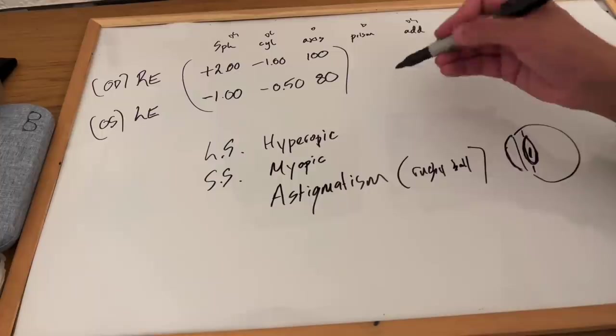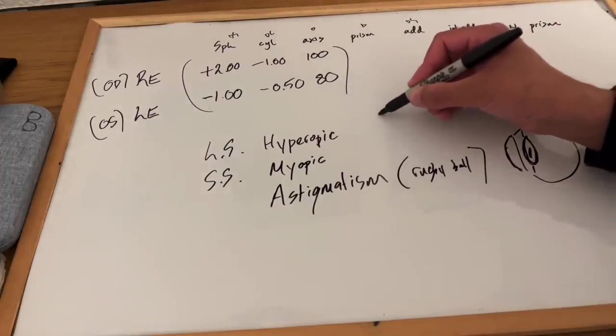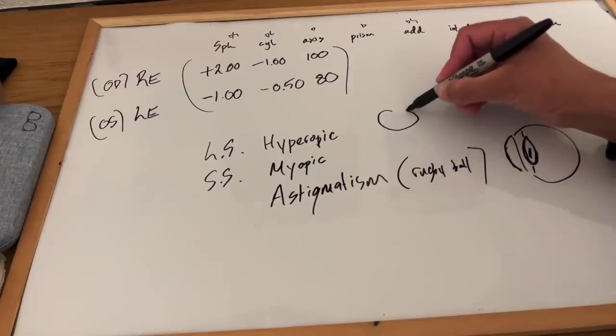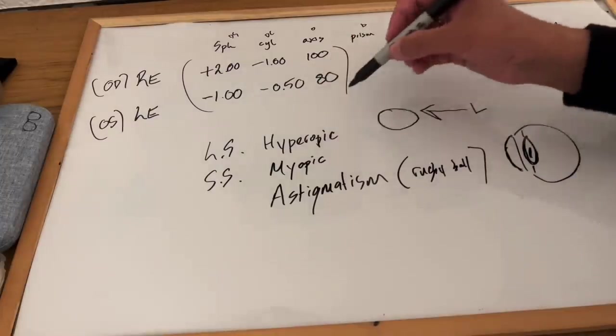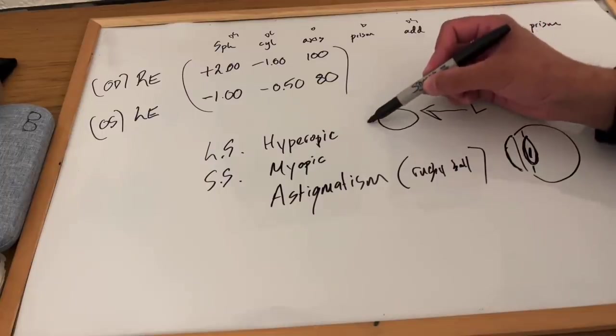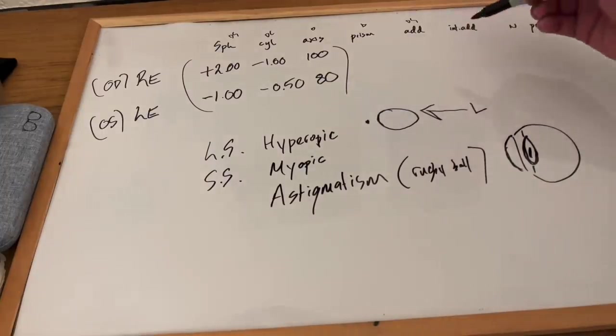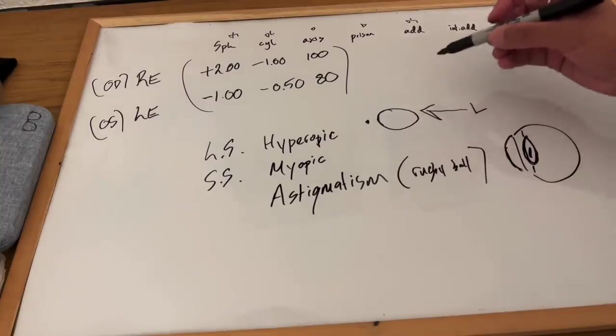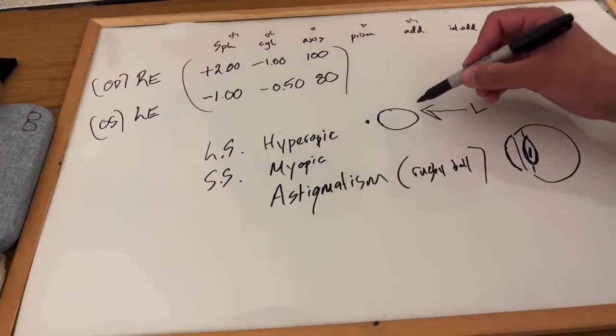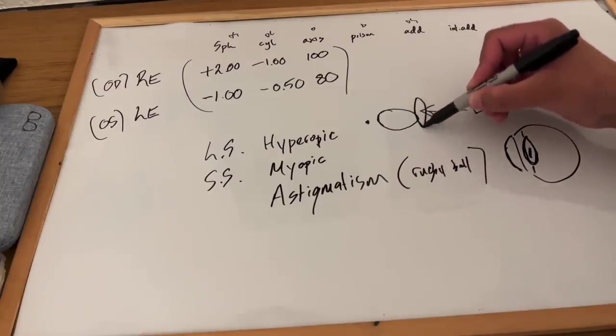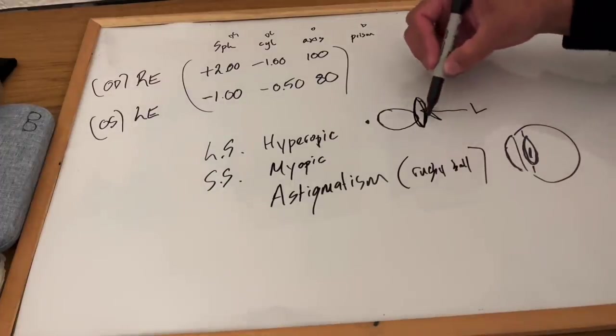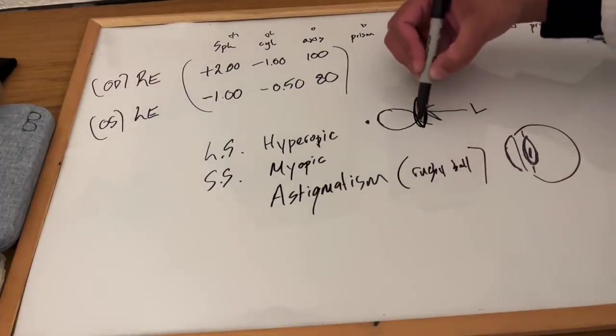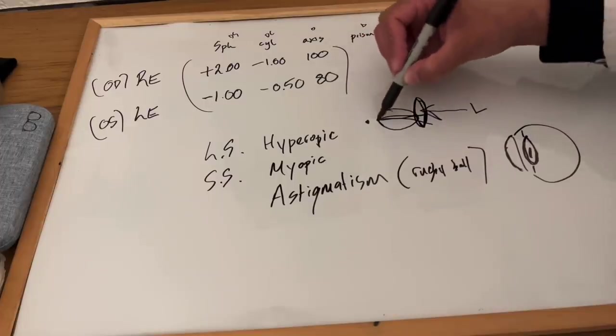So when we're thinking about long-sighted hyperopic, if I can just try and draw an eye here, cross-sectional view there, the light coming in, when you are hyperopic, the light is focusing behind the retina at an imaginary point there. So we will place a positive lens in front, a convex lens, and the light then hopefully if this lens is correct should focus on the retina.